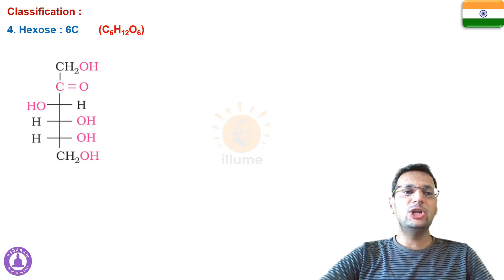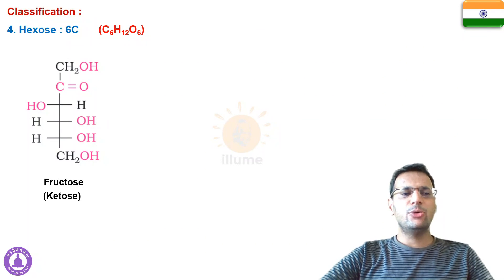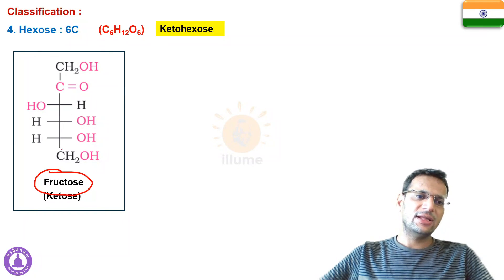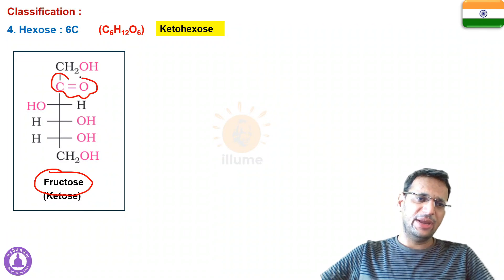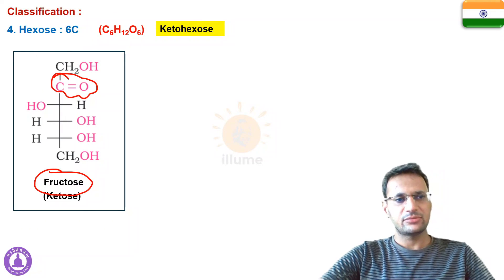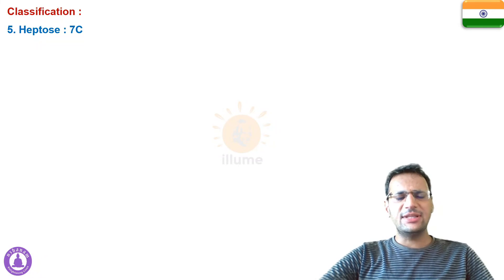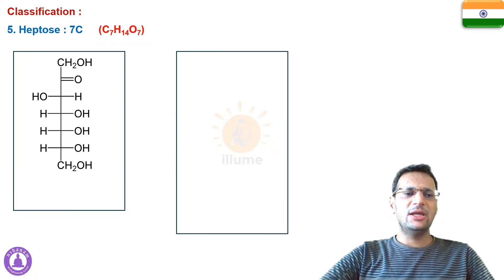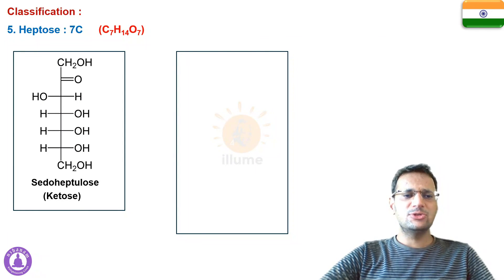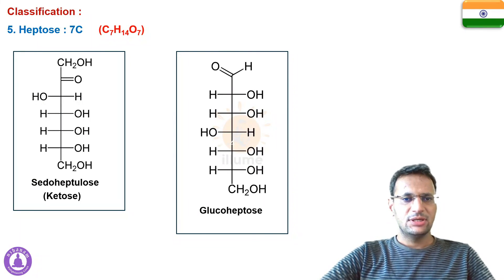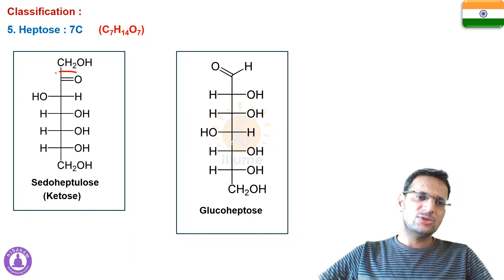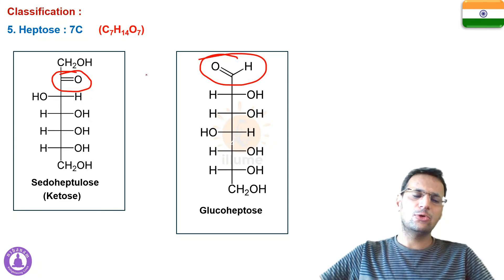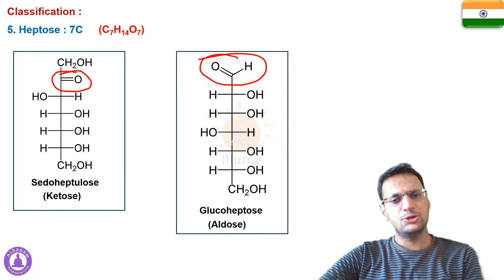The most important ketohexose is fructose, which contains a ketonic group — that is the main difference between glucose and fructose. The last group is heptoses: seven-carbon monosaccharides with the formula C₇H₁₄O₇. Examples include pseudoheptulose (ketone group → ketose) and glucoheptose (aldehyde group → aldose).